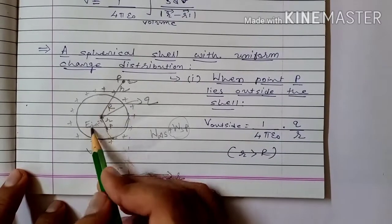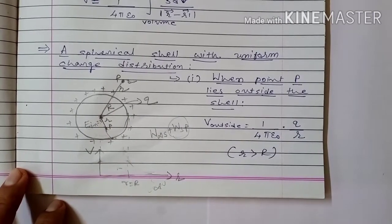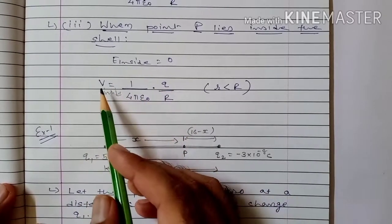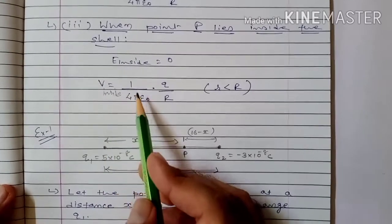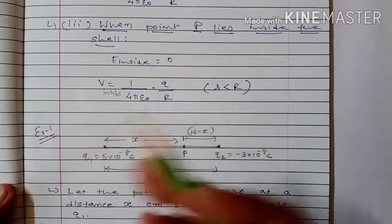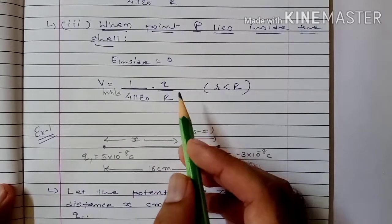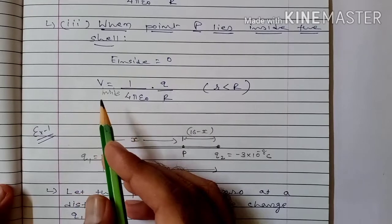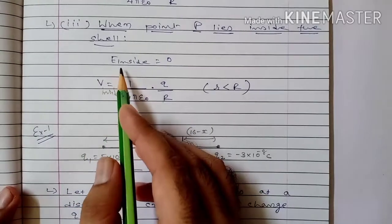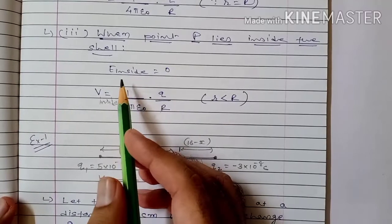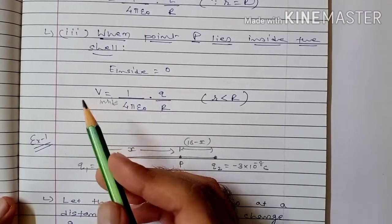Therefore, everywhere inside the shell — at any point — the electrostatic potential remains the same as the potential on the surface, which is 1 upon 4π ε₀ into Q/R (for r < R). It is important to note: when the electric field is zero, the potential is not necessarily zero. Potential may or may not be zero when the electric field is zero.